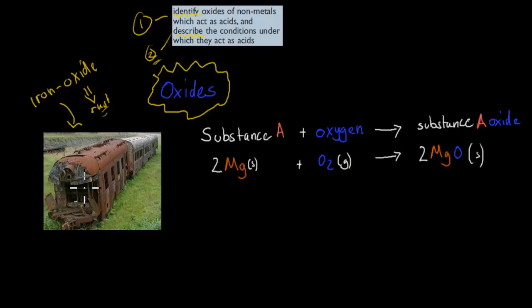This train is rusted because over time it's come in contact with oxygen. The word oxide has oxygen in it, and anything which is an oxide usually has oxygen attached in its structure somewhere.